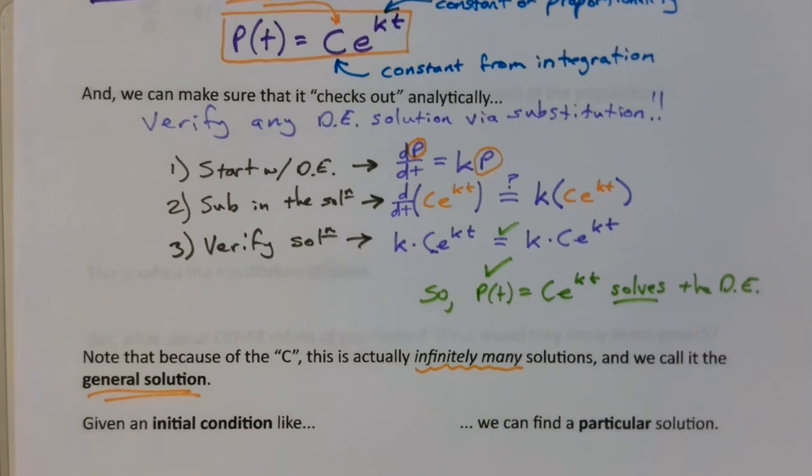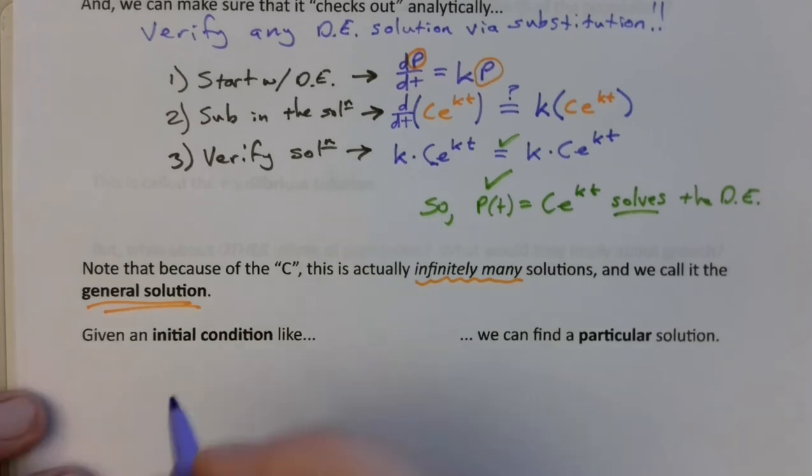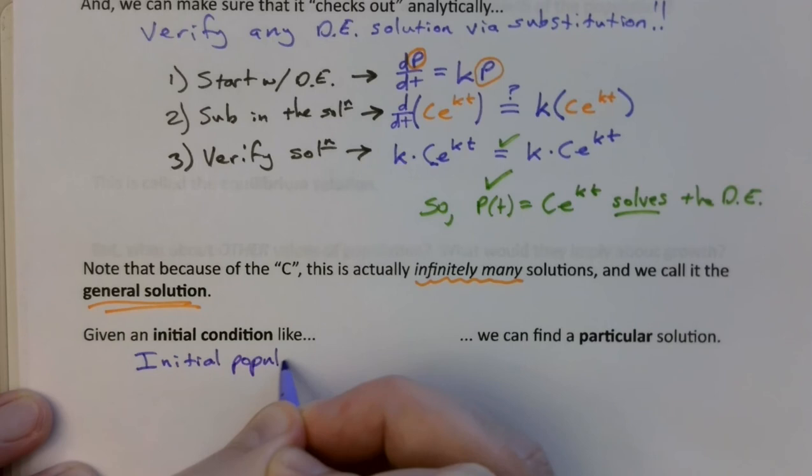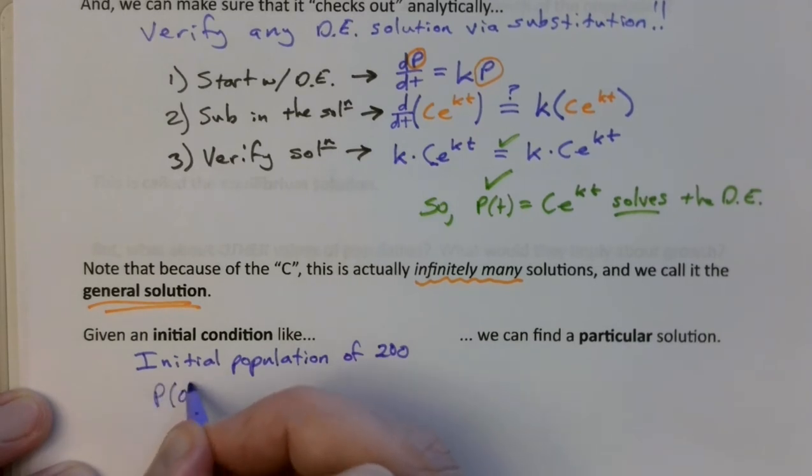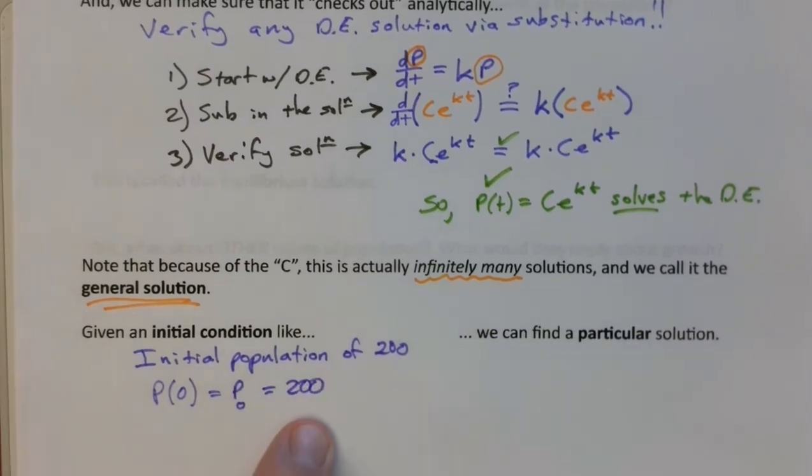If you want to know about a particular solution, you have to have a particular initial condition. And so an initial condition for us is something like, well, what's your population to begin with? So if you have our initial condition of an initial population of, I don't know, 200, then that means your initial population, sometimes it's written like this, P(0), or sometimes it's written like this, P with a little subscript zero. They both mean the same thing. That's equal to 200.